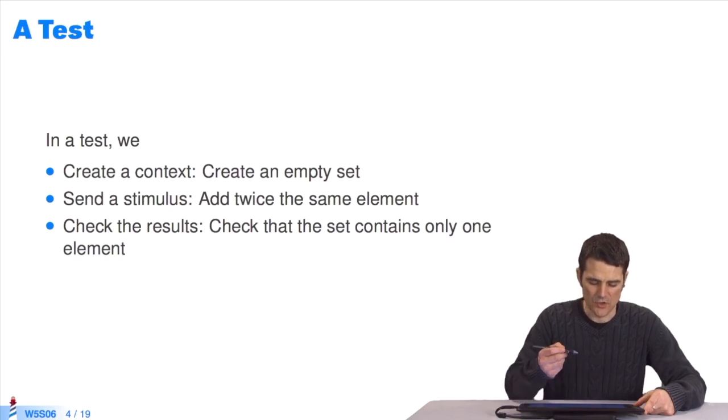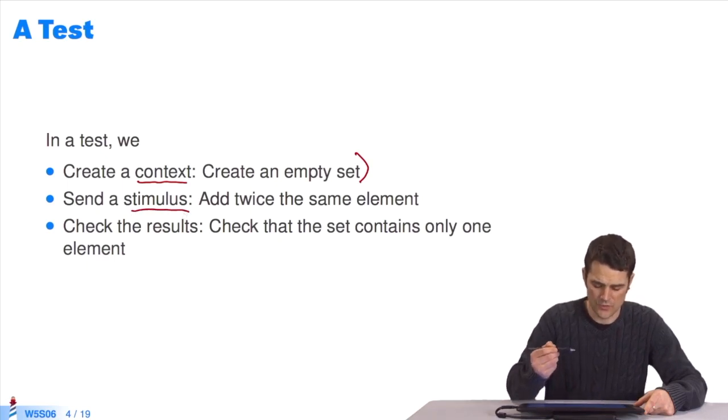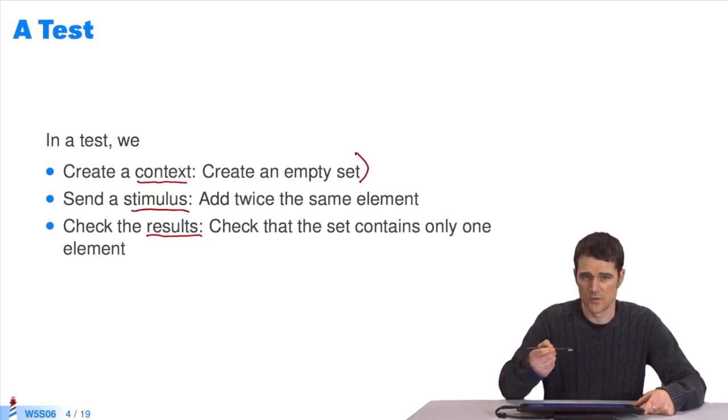So what is a test? There are three steps to writing a test. Step 1: We create a context, for example, an empty set. Step 2: I create a stimulus, so I try to insert an element twice in the set I've just created. And step 3: I test the result that I get, which means that I wait until the set only contains one element. A set object can only contain an element once, it can't contain it twice. Then I test the result, hoping the invariant isn't broken.